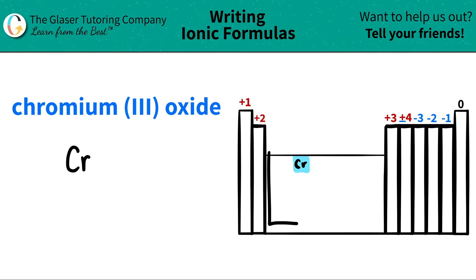But now, since chromium is in this little box here, those are transition metals, and transition metals have many different charges. Which one am I going to use in this case? That's why they give us the Roman numeral.